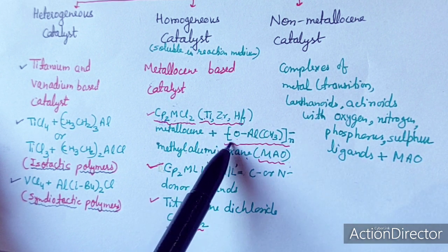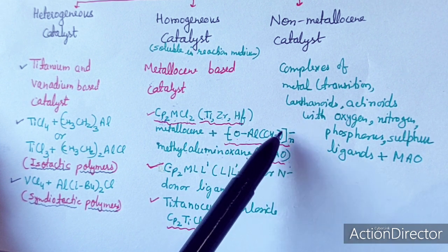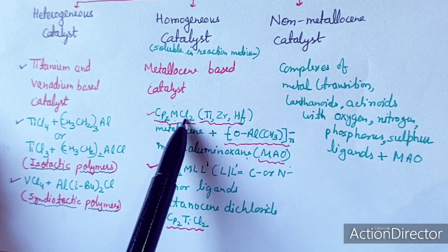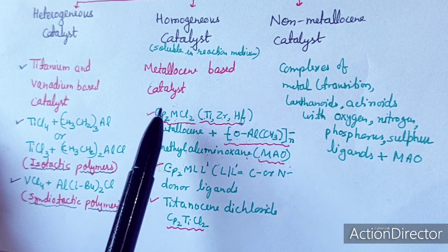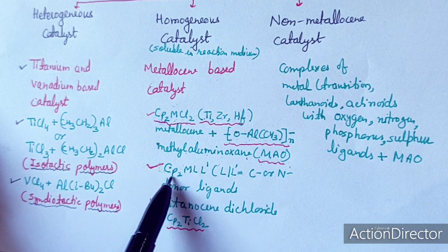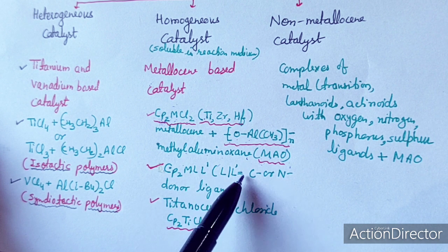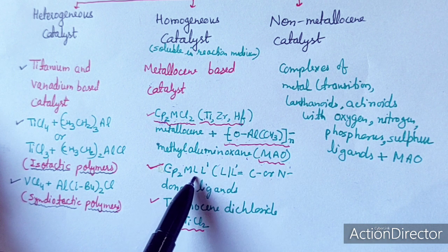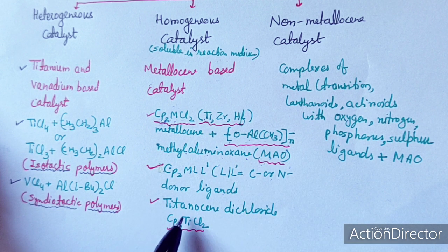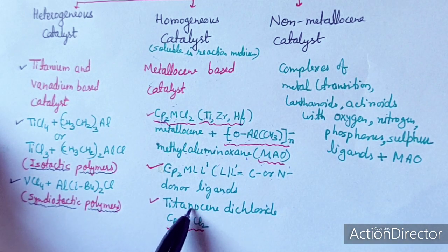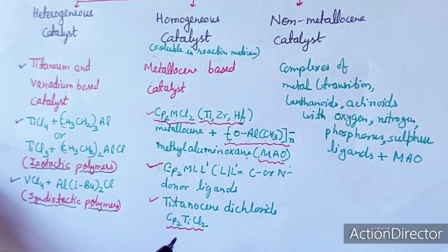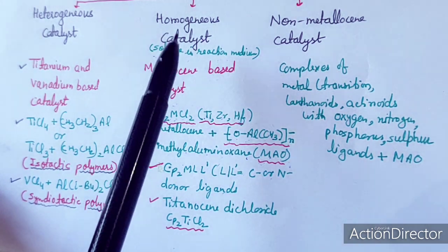Methylaluminoxane (MAO) has the formula [OAl(CH3)]n. When the metallocene precatalyst reacts with MAO, it generates the active catalyst — a metallocene cation. In Cp2MLL' complexes, L or L' may be C or N donor ligands or halides, as in titanocene dichloride. Our focus is on homogeneous catalytic polymerization, not heterogeneous.